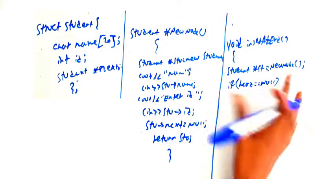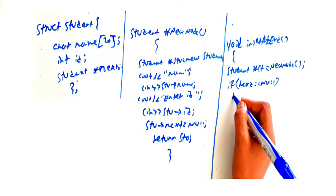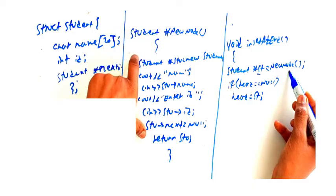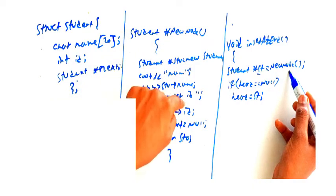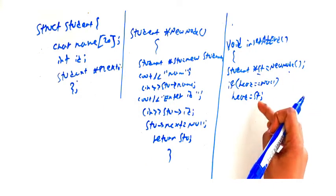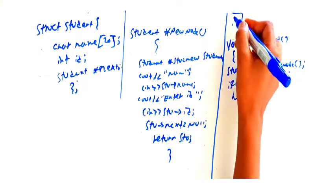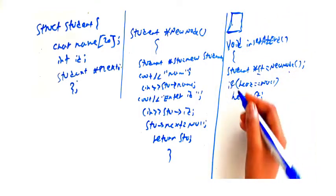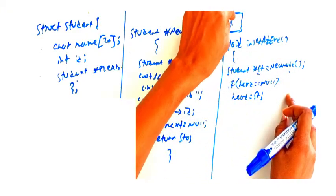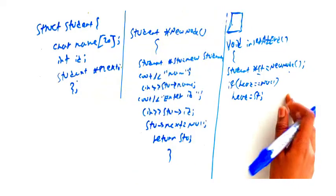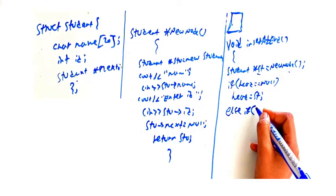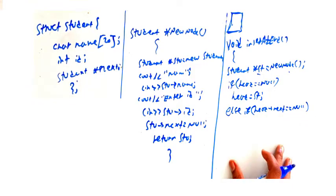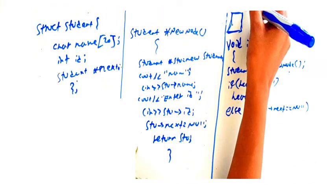So, if you want to add a new node, you can add the new node and store the value as head. As you have seen here, for instance, there is a head on here. Head next element is null.